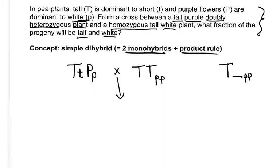What fraction will be tall? Well, pretty much all of them, because every offspring is going to get at least one big T, so this is essentially one, or 100%. Then what fraction are going to be little p little p? You'll definitely get a little p from one parent, and half the progeny will also get a little p from the other parent, so it's going to be 50%.